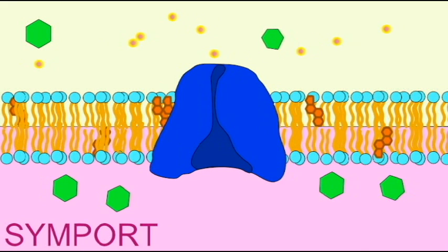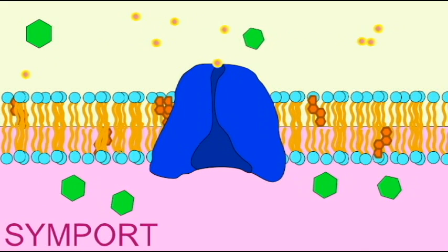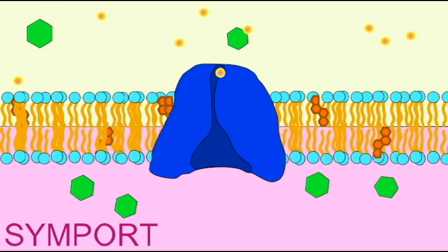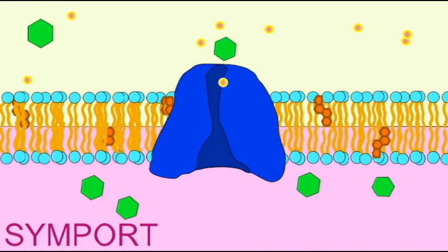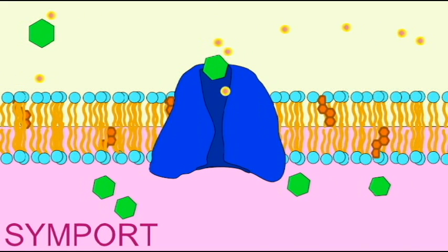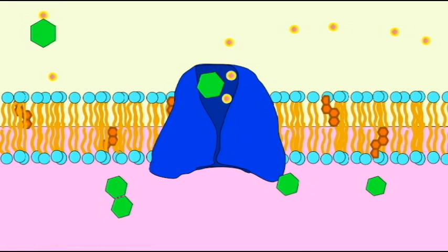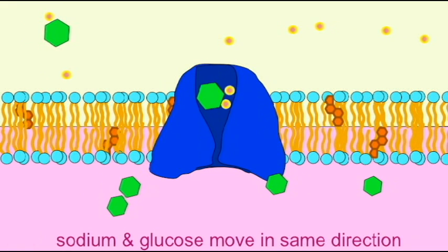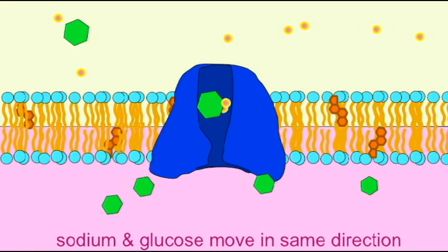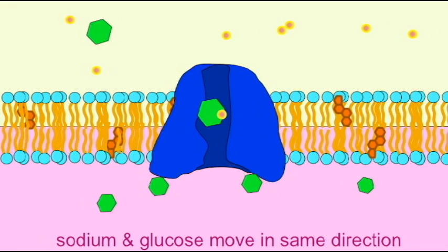This type of transport is referred to as symport since the two substances are moving in the same direction. The glucose or amino acids for example are entering the cell along with sodium which is entering the cell. This is considered as a type of active transport.